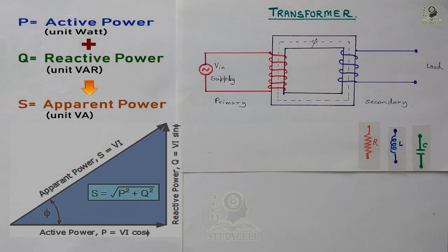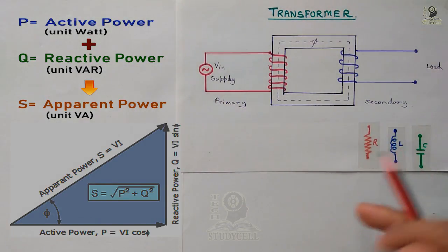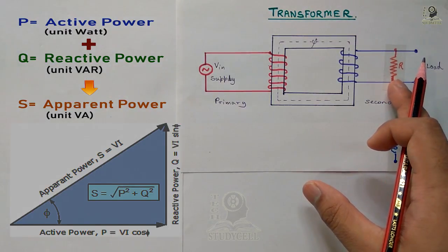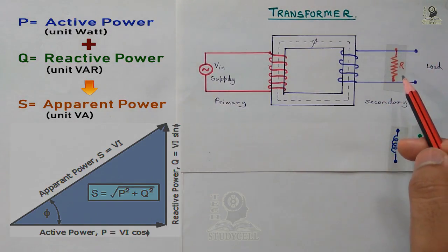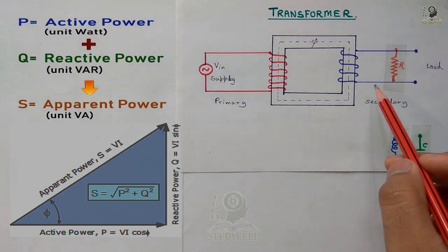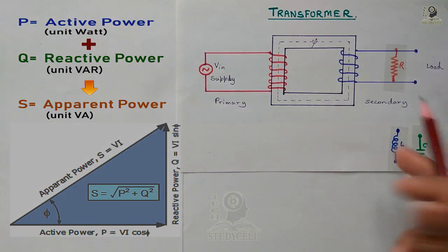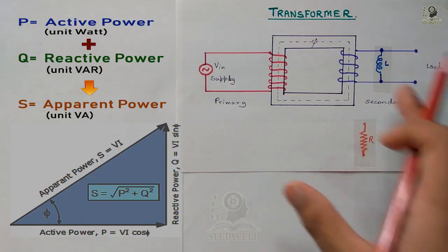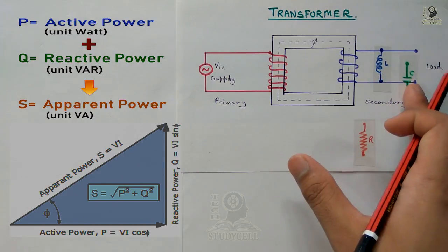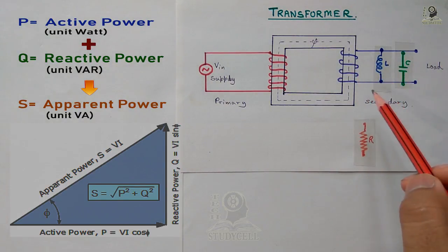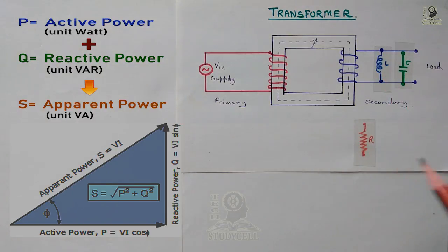As we discussed earlier, the resistive load will consume active power. So if I connect a purely resistive load at the secondary, it will consume only active power. And if I connect a purely inductive or purely capacitive load, it will consume only reactive power at the secondary.